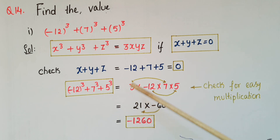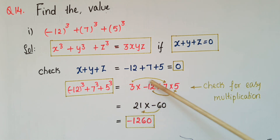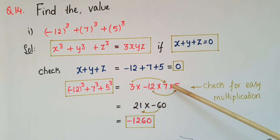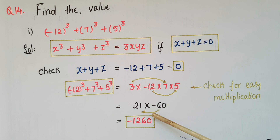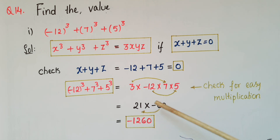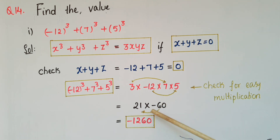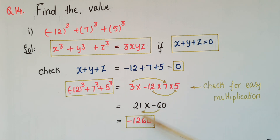Multiplying: 3 times 7 is 21, and 12 times 5 is 60, so we have 21 times 60, giving 1260, and with the negative sign, the answer is minus 1260.